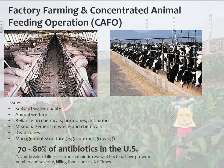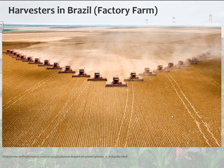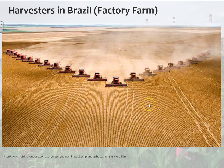Just to give you an idea of why we call this factory farming — here's a farm in Brazil, looks like a corn farm. These combines are massive. This is industrial production — it's farming, but really just industrial-scale farming. This is like a giant machine.